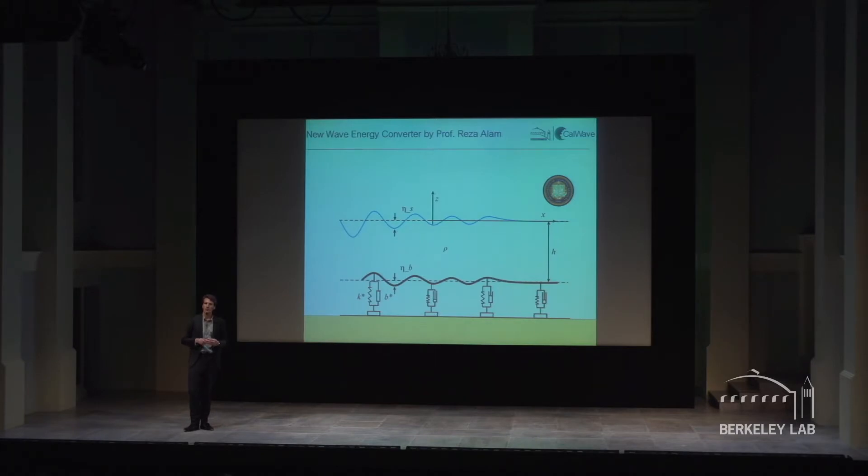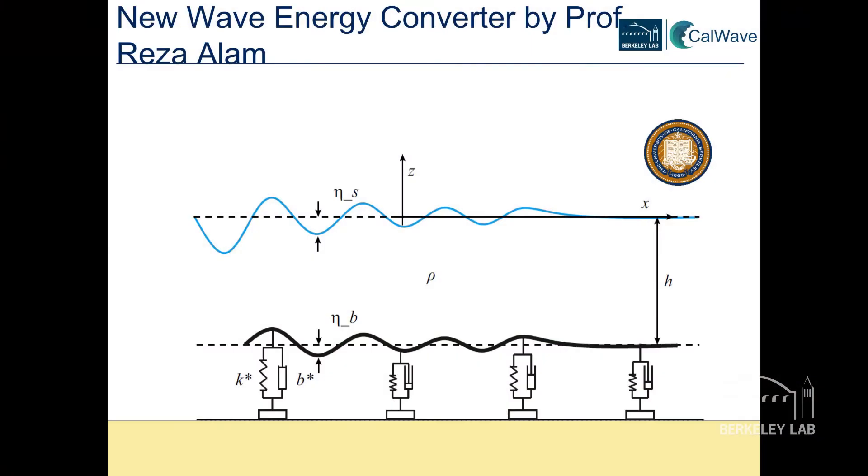A researcher here at Berkeley, Professor Alam, tried to explain this phenomenon. He created a mathematical model that uses a viscoelastic seabed hooked on a grid of springs and dampers. Then he had the great idea: why not use these dampers as generators and actually produce power? It's quite counterintuitive to have a device on the bottom. But that was one of the major hurdles of the industry so far — most devices on the surface struggle with the high range of loads, safety factors, slamming forces, and storms.